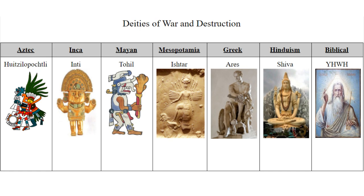Next are deities of war and destruction. Inti, similar to Yahweh, is on this list because both the Inca and Hebrew peoples used conquest and warfare as a means of appeasing their respective gods — though they are not technically the gods of war. Shiva is on this list not because he is a god of war, but because he is the most important deity of destruction, with the epithet of 'the destroyer' often associated with him. Ares, Ishtar, Tohil, and Huitzilopochtli are all deities of war, where war is actually an attribute assigned to them.